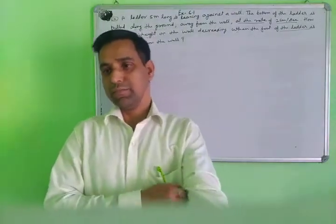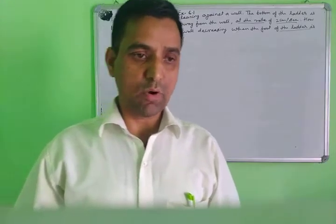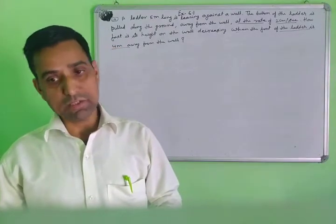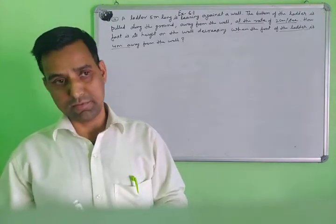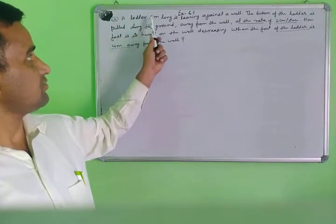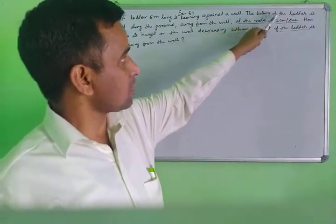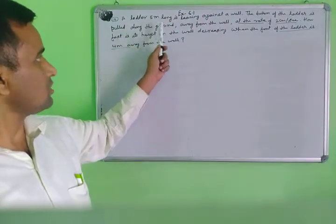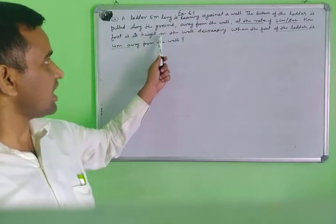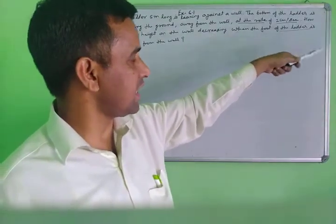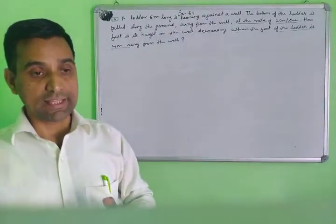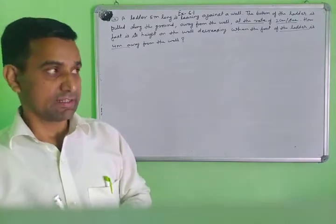Good morning class. Today's topic is problem solving, Exercise 6.1, second lecture. I am taking question number 10. This question is very important because it has come many times in board exams. Read the question: a ladder is 5 meters long, leaning against the wall. The bottom of the ladder is pulled along the ground away from the wall at the rate of 2 meters per second. How fast is its height on the wall decreasing when the foot of the ladder is 4 meters away from the wall?